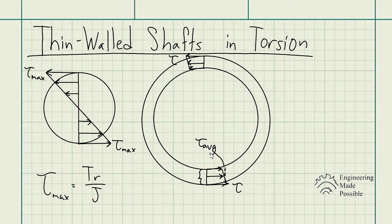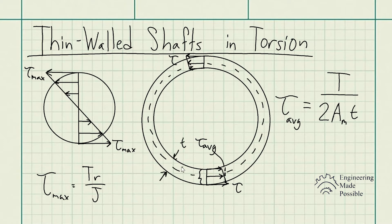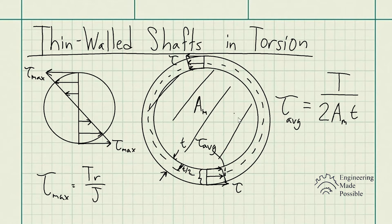This average shear stress was derived — you can reference a textbook on strengths of materials for the derivation. The equation for average shear stress in thin-walled shafts is the torque divided by two times the mean cross-sectional area times the thickness. The mean cross-sectional area is measured at the centerline of the wall, drawn at half the wall thickness t/2 from each surface.